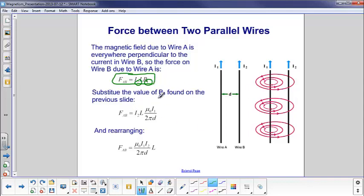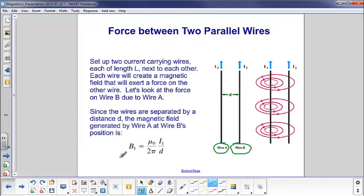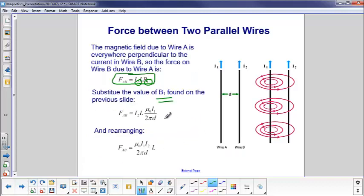Now, we found B1 from the previous slide. So let's go back there for a second. B1 is mu0 I1 over 2 pi d. We come back to our page, and we plug that in for B1. So, this term here came from the previous page.